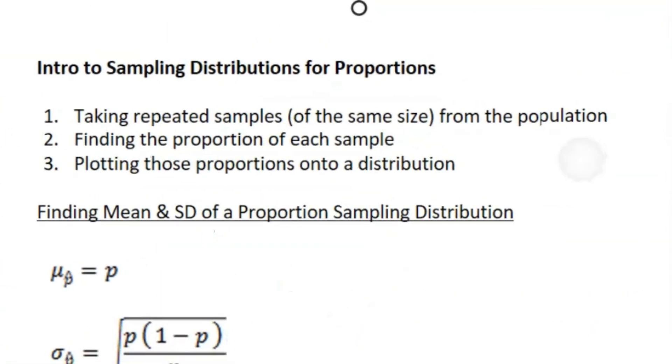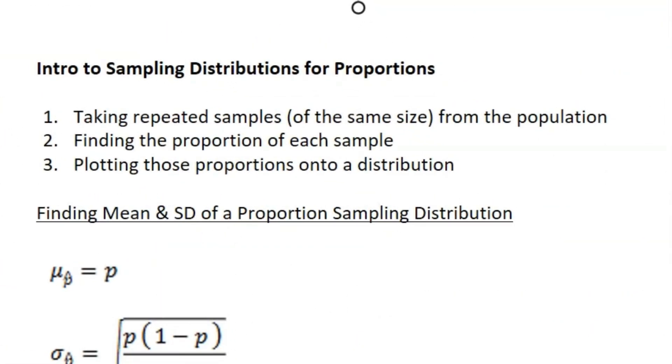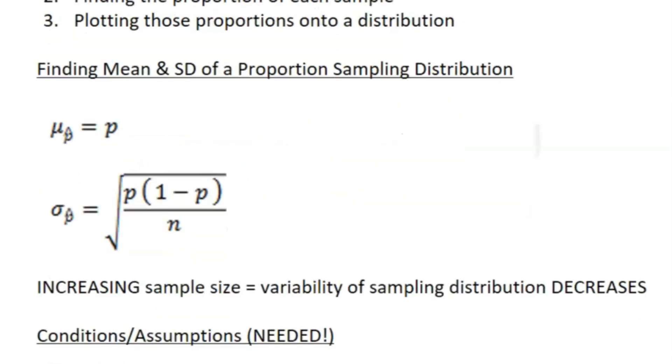Now we're diving into more specifics, starting with proportions. We're going to take repeated samples of the same size from our population, find the proportion of each sample, and plot that information on a distribution. We're going to cover a couple key components. We're not doing full significance tests or confidence intervals in this unit, but this is stuff you need to know and understand to do those in later units.